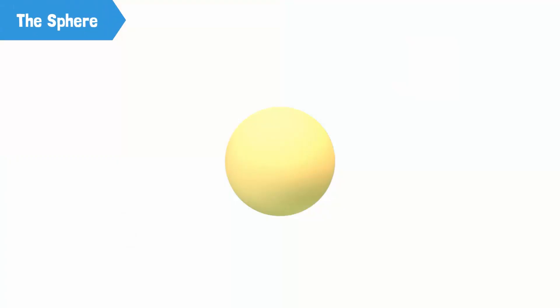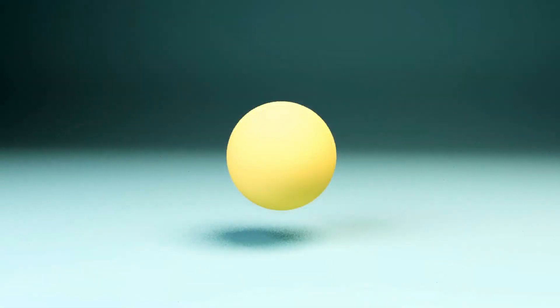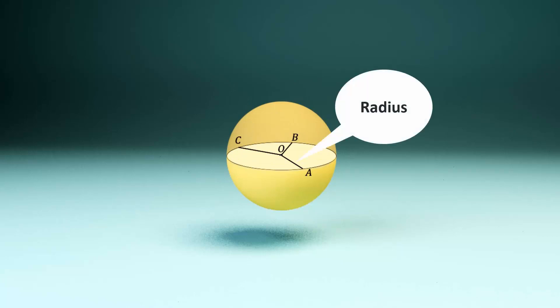The sphere. In math, a sphere is defined as a round, solid figure with every point on its surface equidistant from its centre. The distance from the centre of the sphere to its outer surface is called its radius.